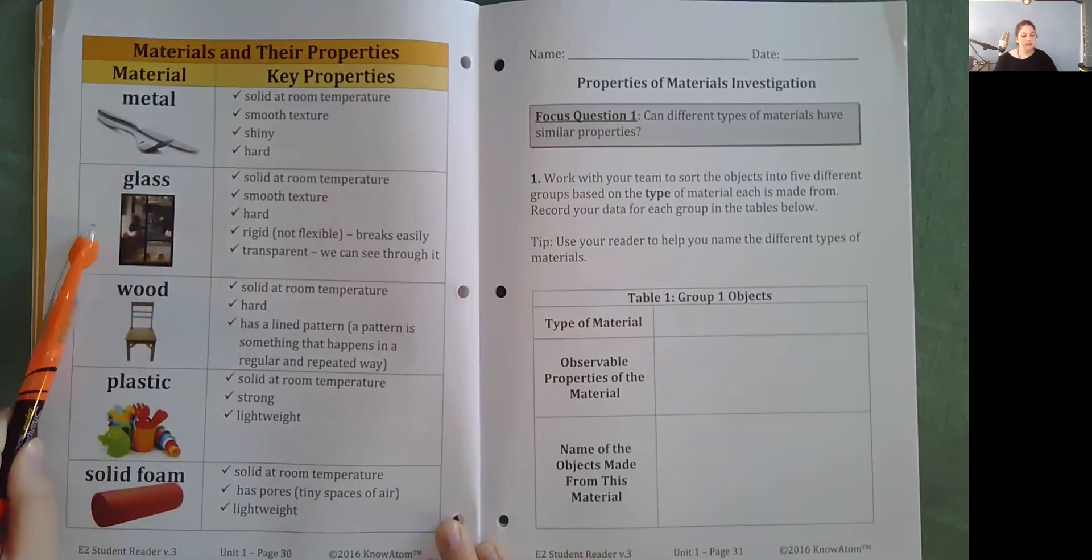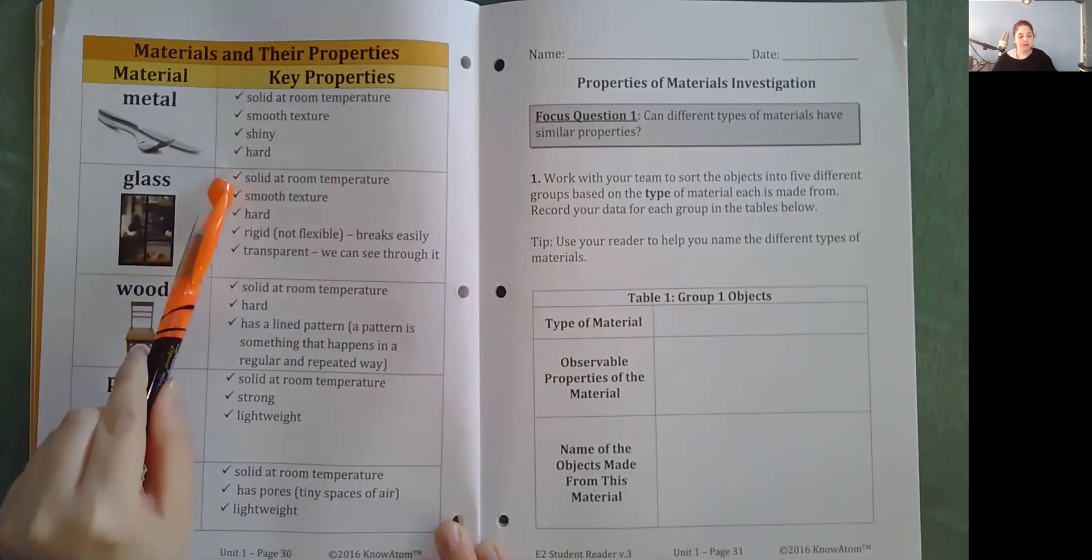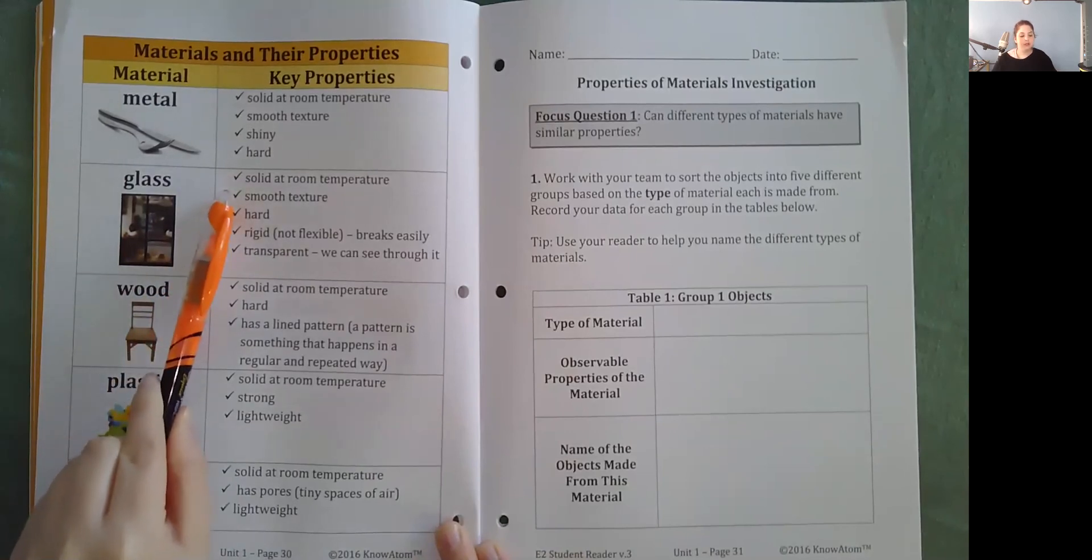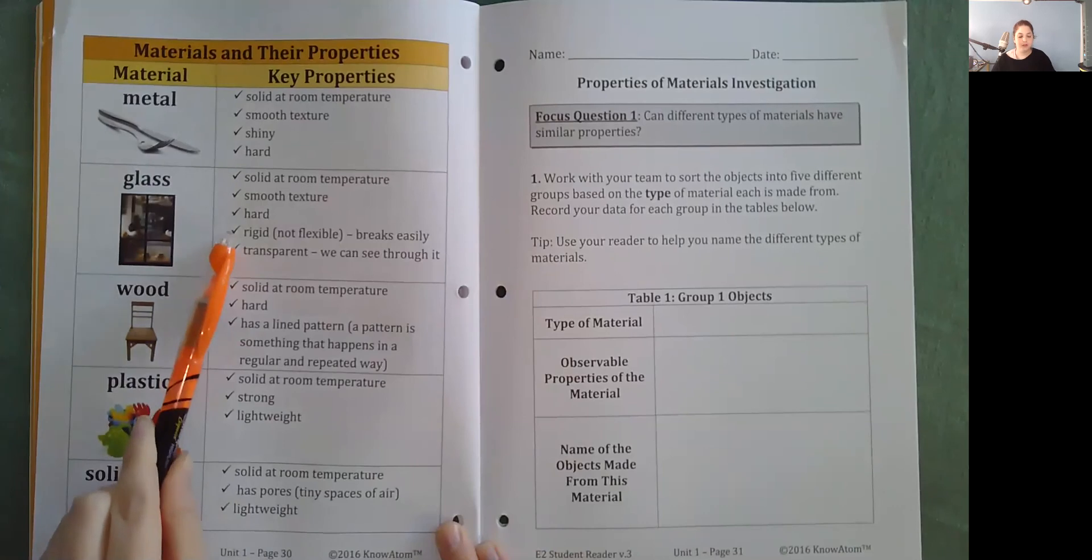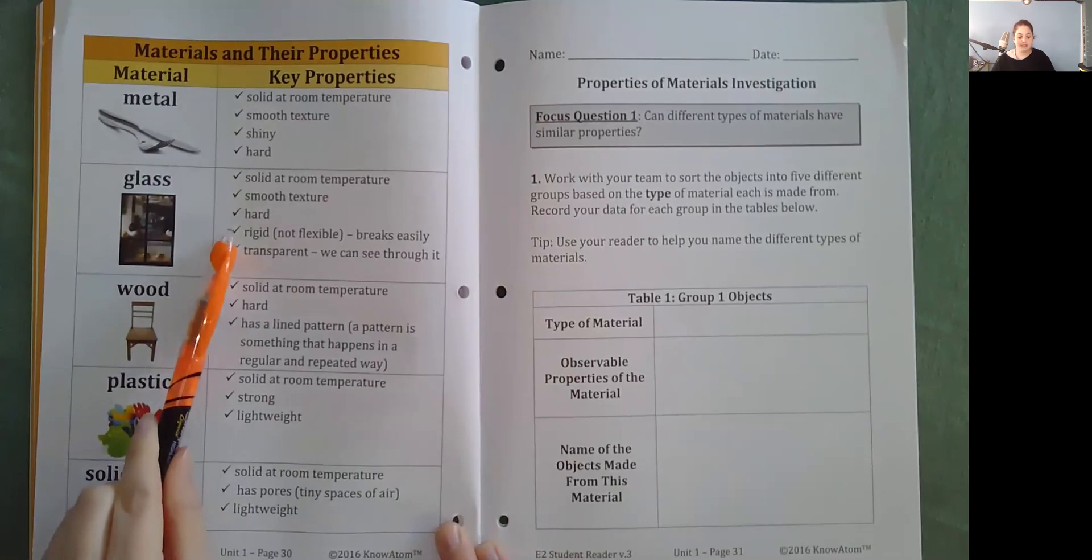Glass. Solid at room temperature. Smooth texture. Hard. Rigid or not flexible. It breaks easily. Transparent. We can see through it.